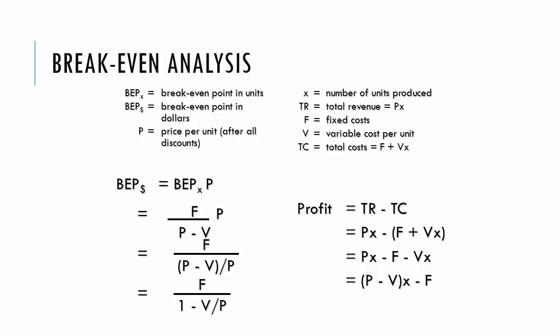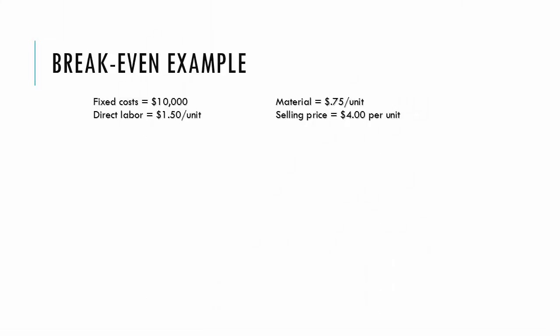So let's look at an example. In this example we have fixed cost of $10,000. Our variable costs are comprised of two elements: labor and material. The selling price is $4 per unit. Using this example we can find the break-even point in both dollars and units.